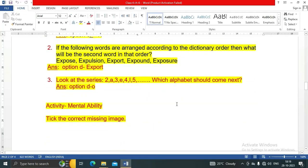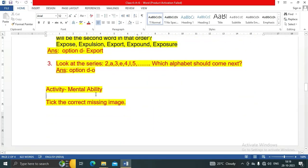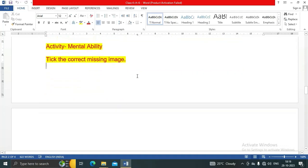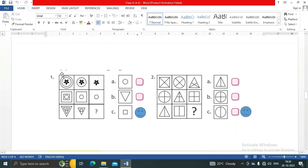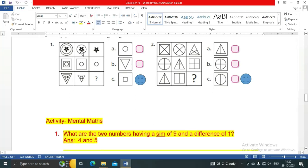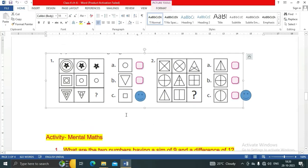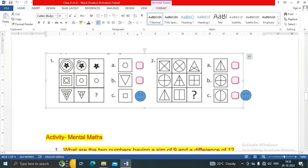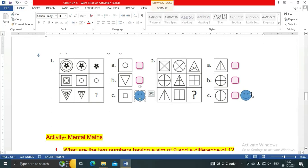Let's see Activity Mental Activity. Tick correct missing image. So, which one is the correct missing image? Here C is the correct missing image. That's why I put this mark here. The smile is here, and I think this one is the correct. In both conditions it is the correct answer.